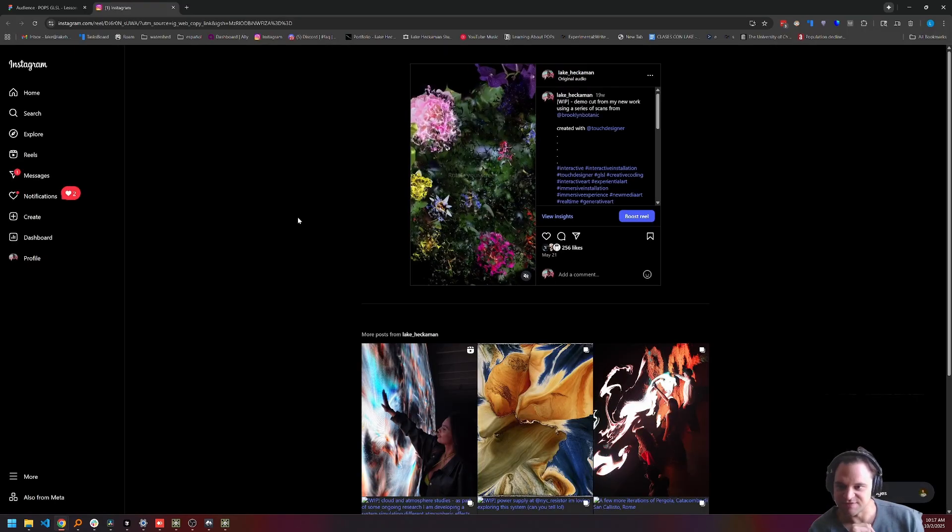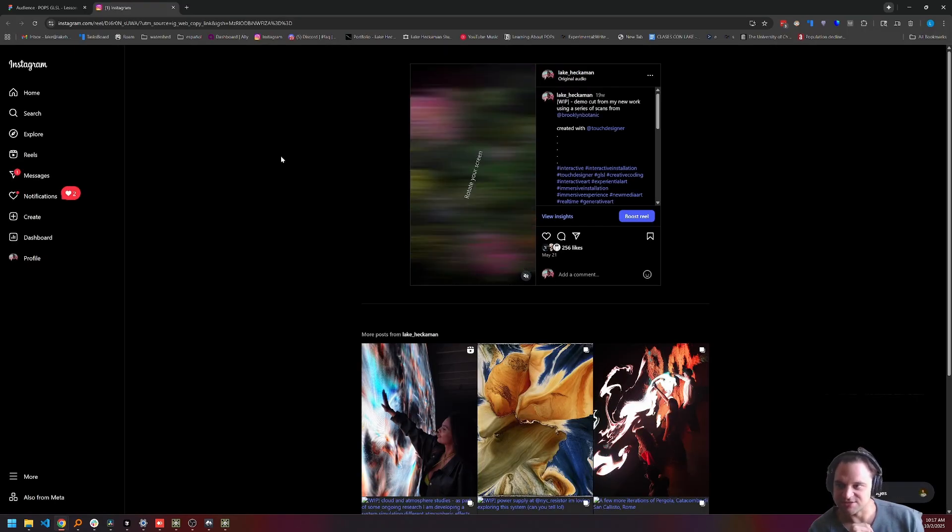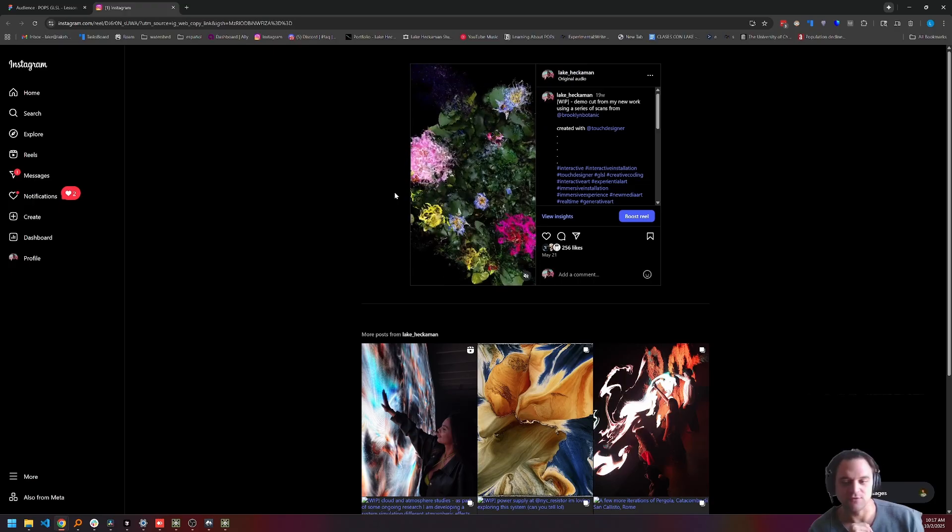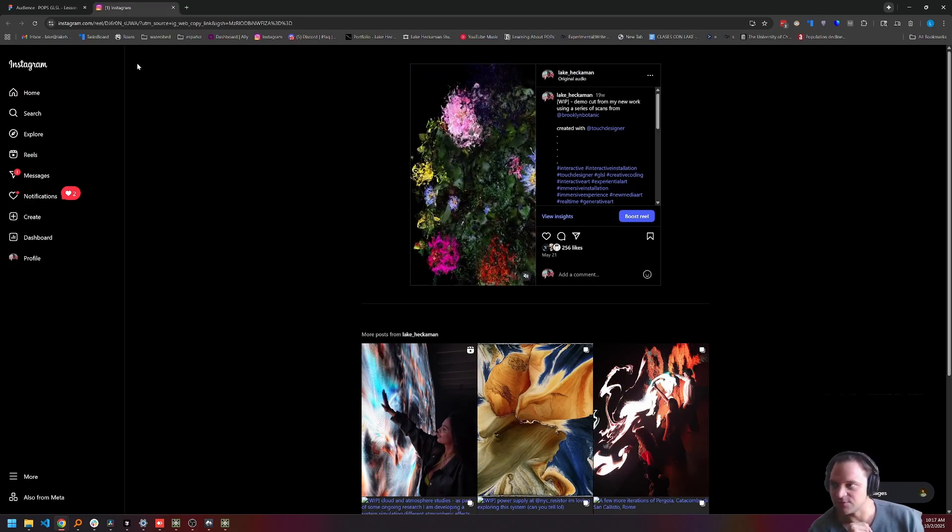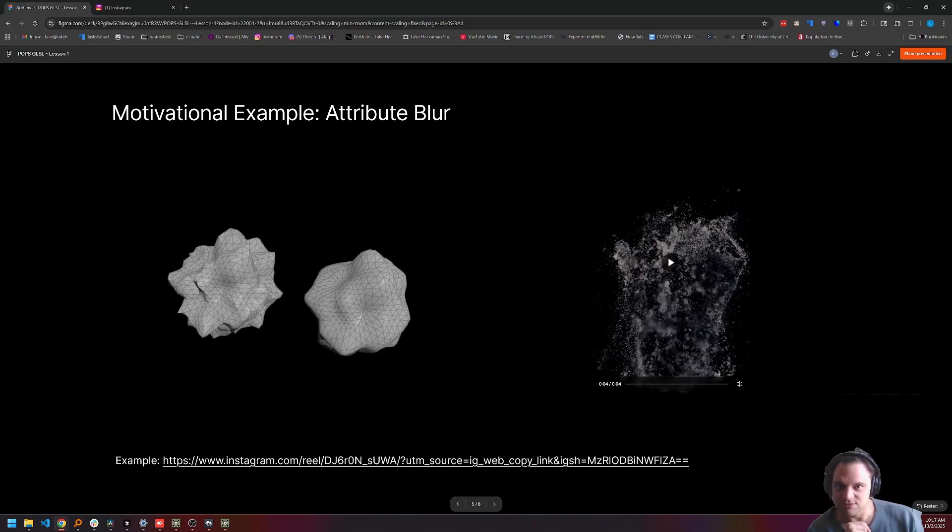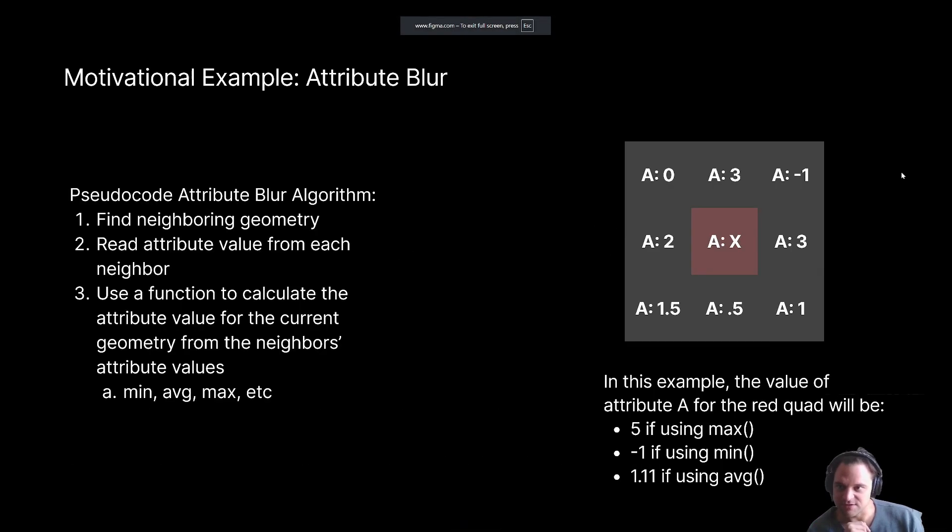And last, there is this other example that I wanted to show you, which is very similar, but again, just some more motivation for how this technique can be useful. So let's go back to our screen, and then we'll come to our last slide of the lecture for today. It's going to be a little bit shorter and more focused on TouchDesigner. But I did want to go through what the attribute blur algorithm actually does, some pseudocode for it, and a very trivial example.